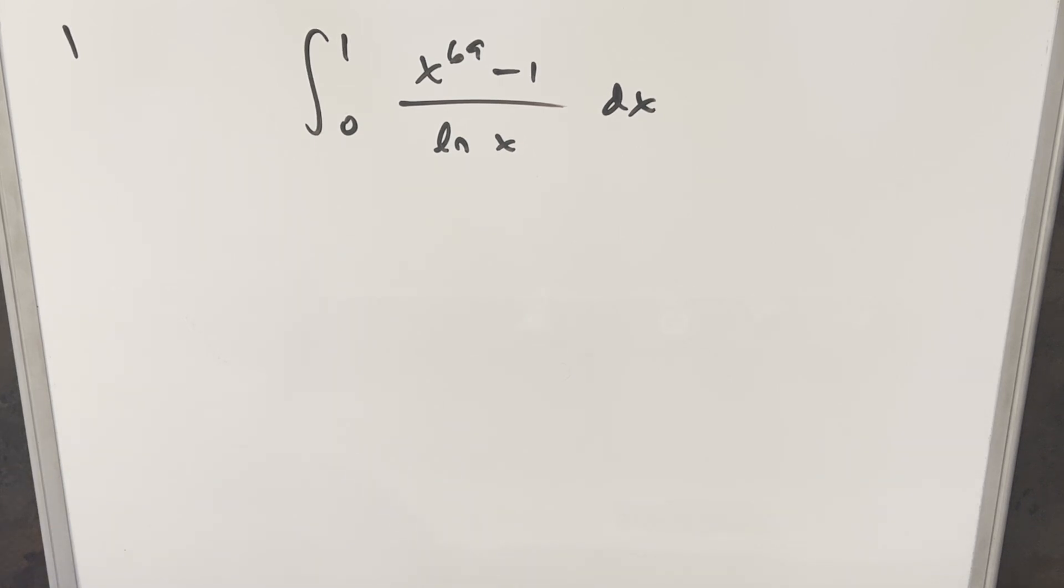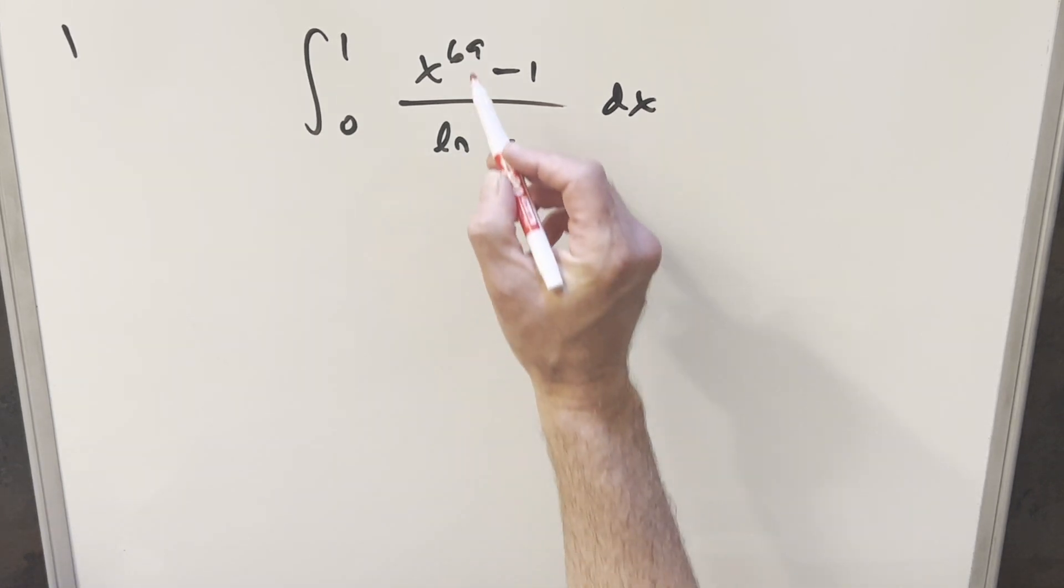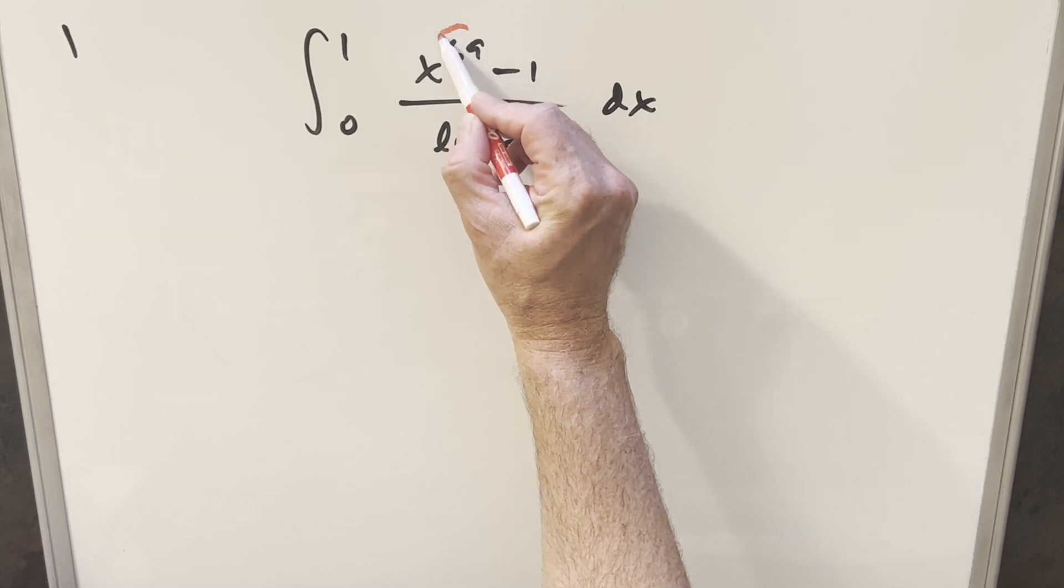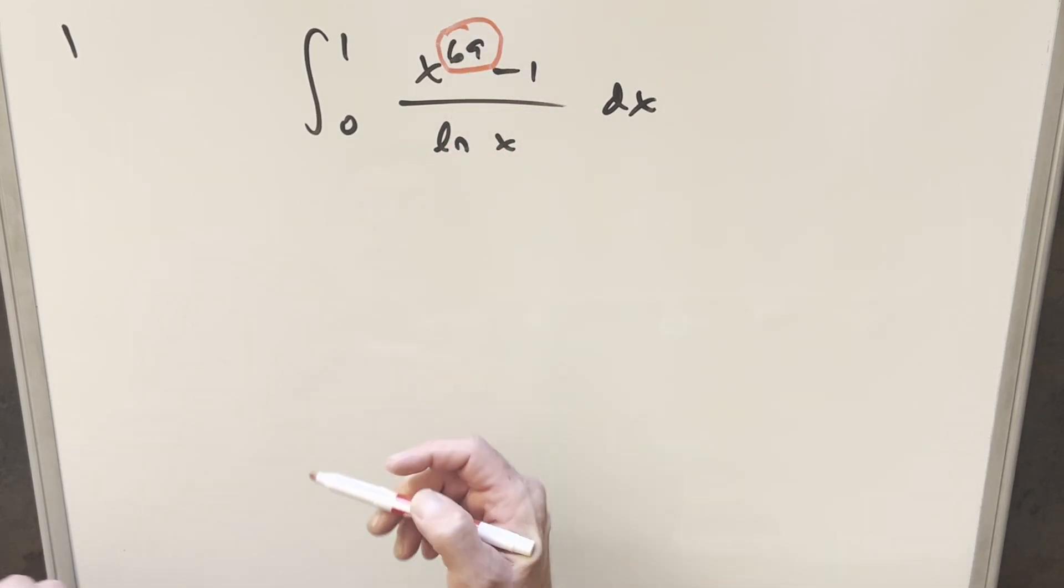I know I did a problem really similar to this just like a few weeks back, and the only difference was I'm pretty sure the exponent wasn't 69. It was probably 2024, because that's what they usually use. But in this case, they use 69 for the exponent.